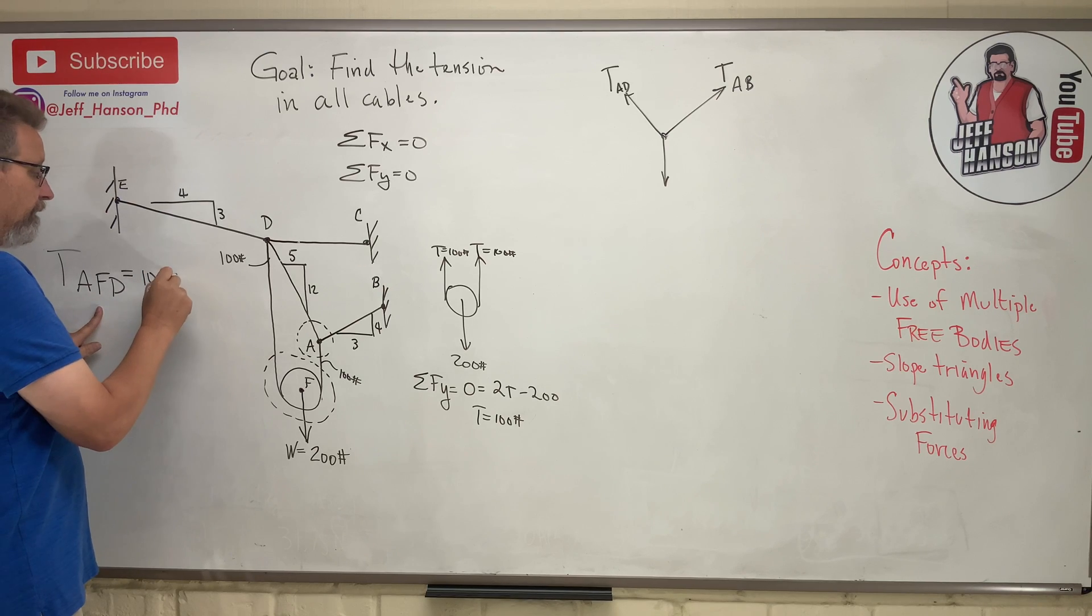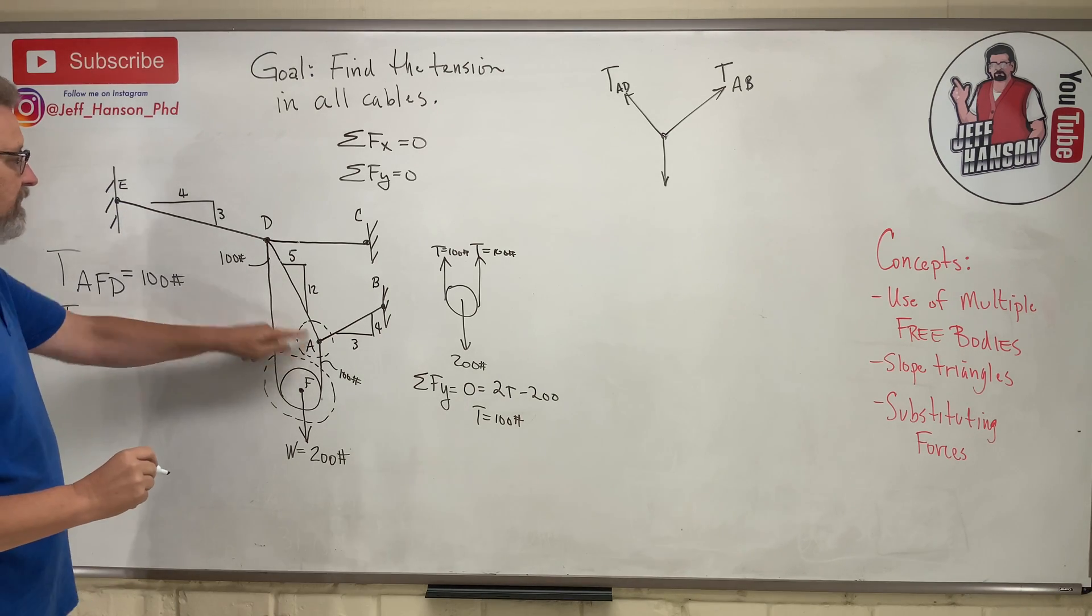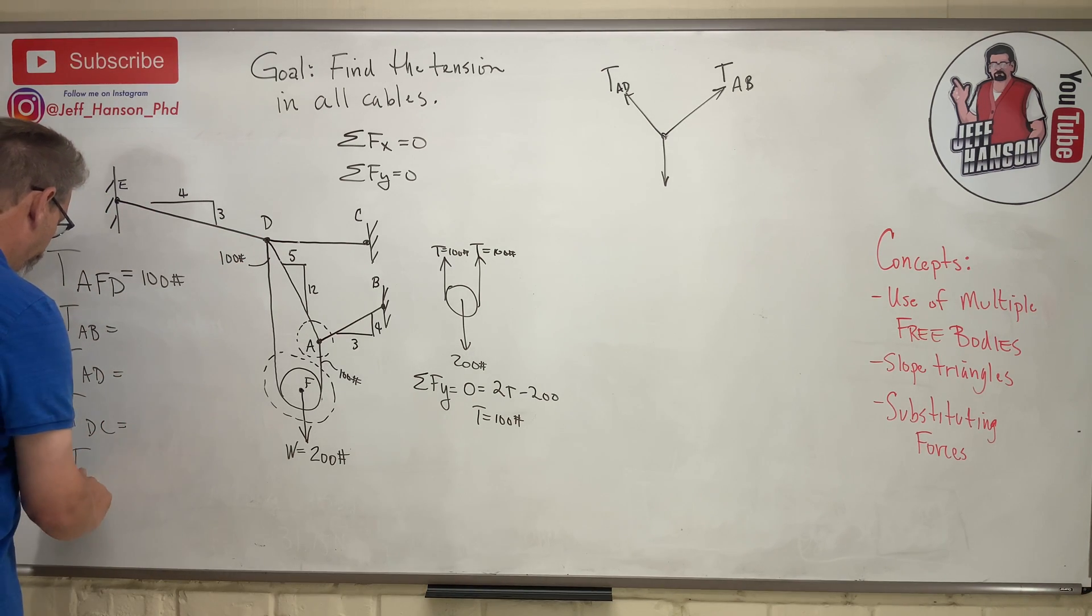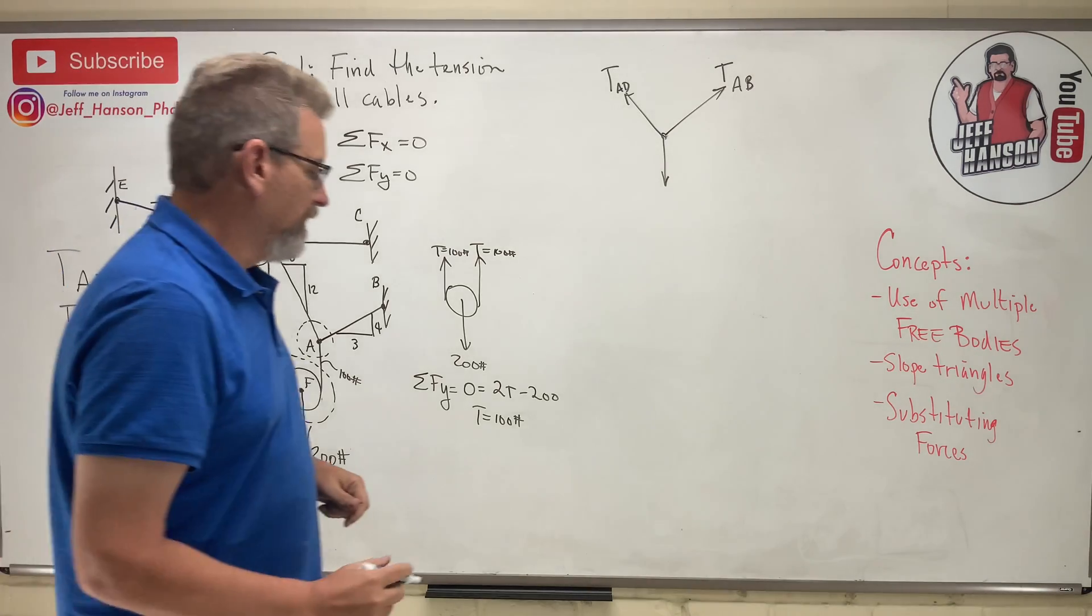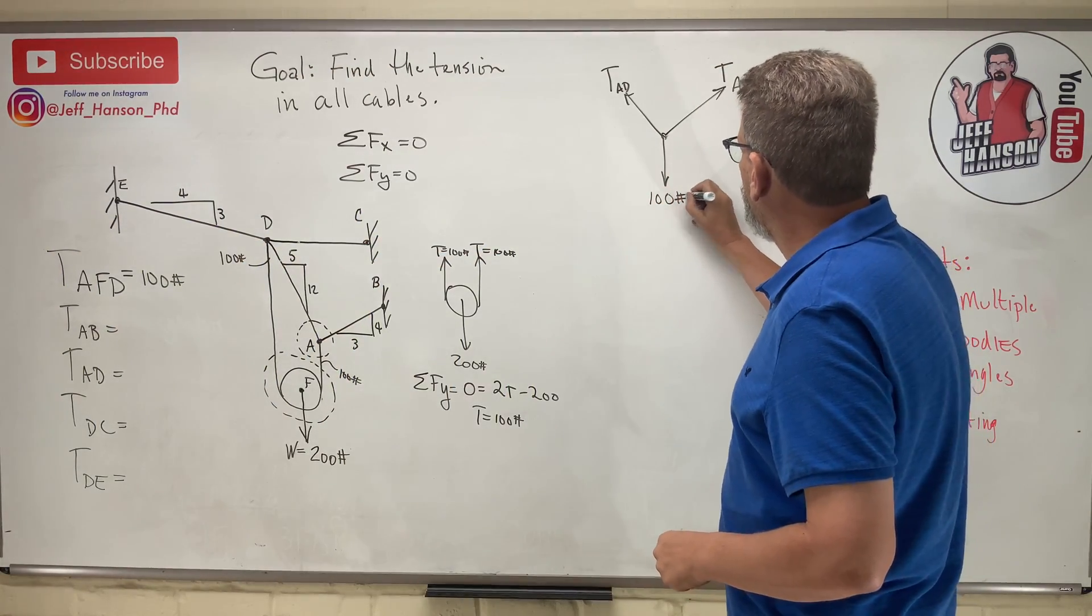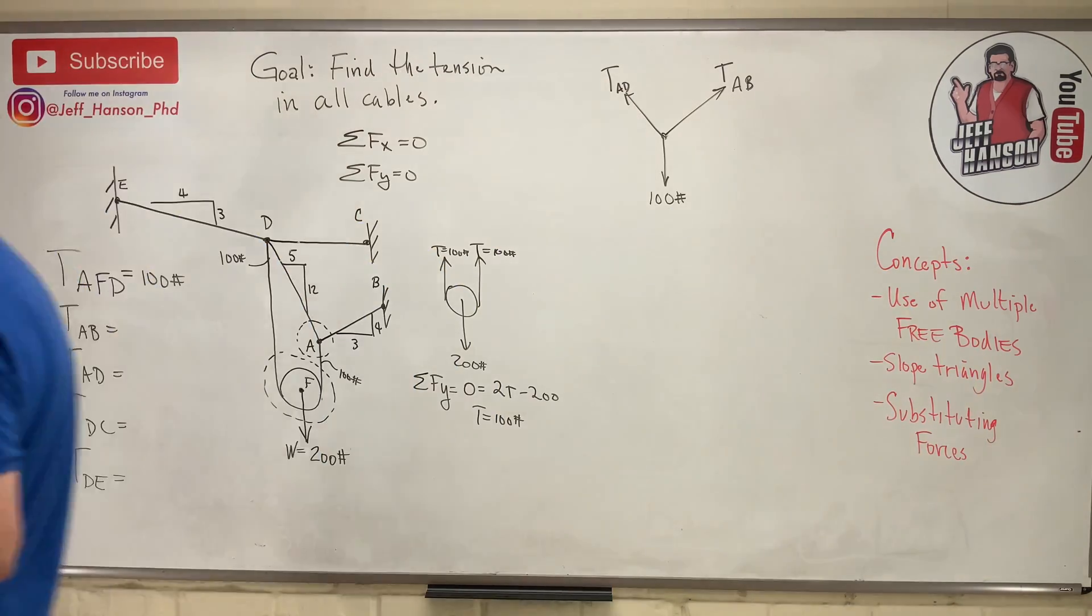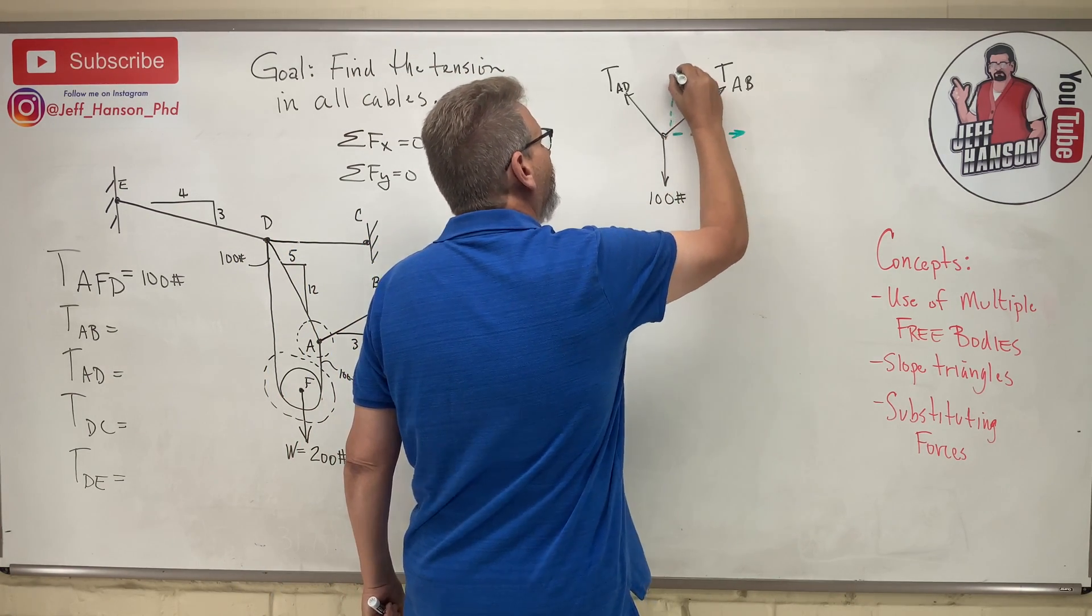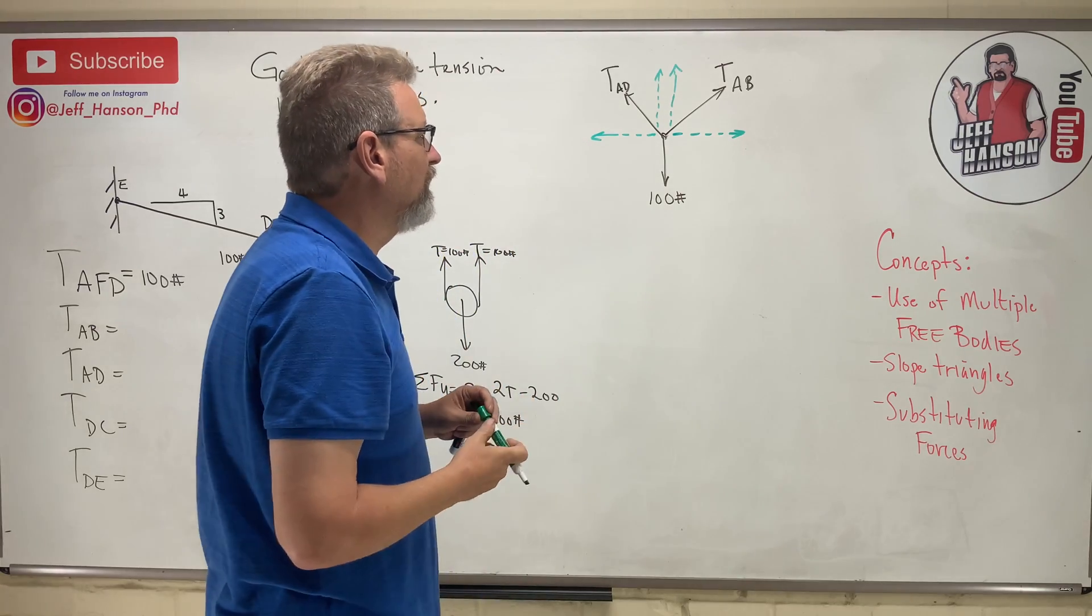And we've got to find TAB, and we've got to find TAD. We have to find DC, and we have to find DE. This guy, 100 pounds. Now, here we go. What do we have? We have a vector at an angle. We need to break it into components. Let me get a colored pen. Let's do it green. So this guy here has two components, one there and one there. This guy has two components, one there and one there. So let's see if we can label these. Now, we're using those slope triangles here.